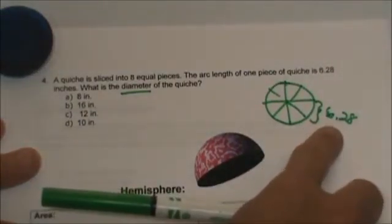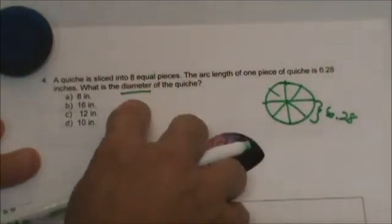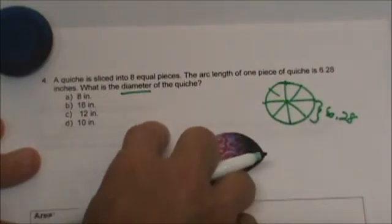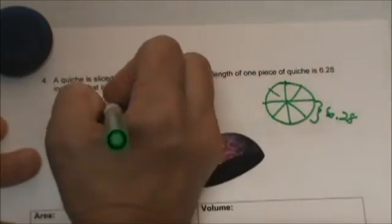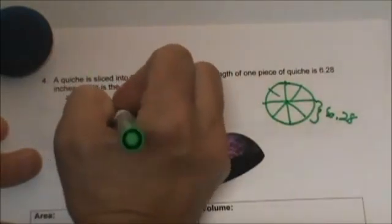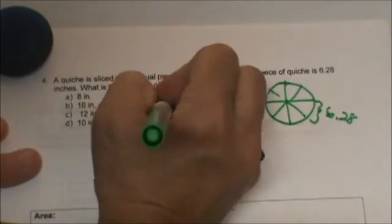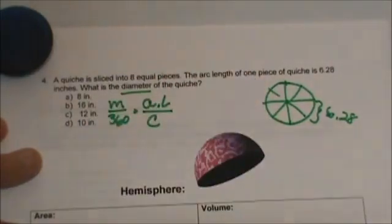Remember what I showed you? We are going to take the measure over 360 is equal to the proportion of arc length over circumference. Let's write it down. Measure over 360 is equal to arc length over circumference.